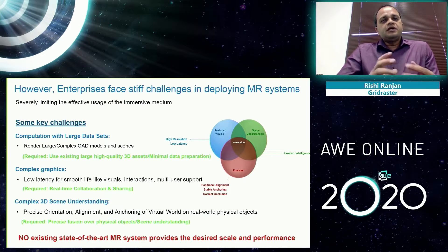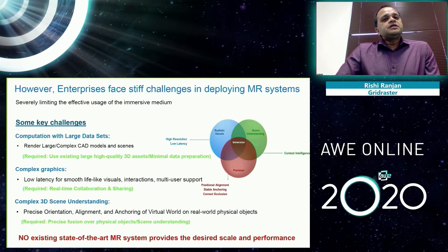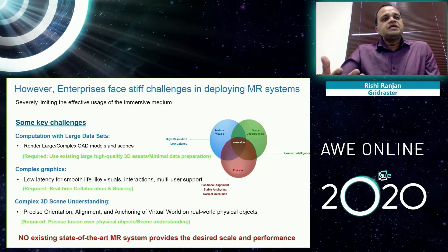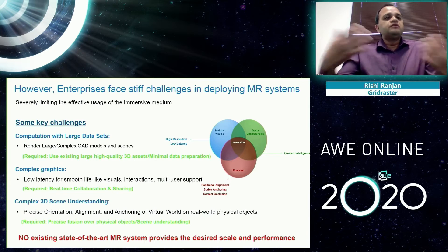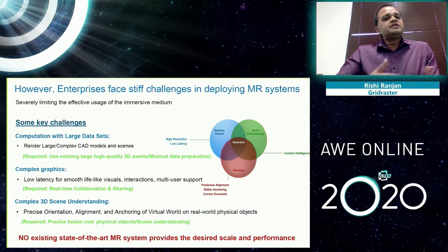The third pain point is that every customer is aligning the virtual world with very complex surfaces. The real-world surfaces are not like a simple plane or a circle — these are like real car parts on which they need to align their virtual world. And the platforms out there today don't provide that performance. They don't provide the scale.